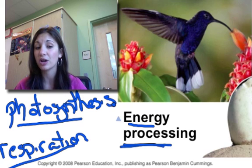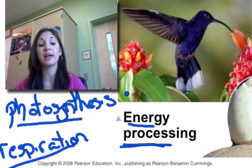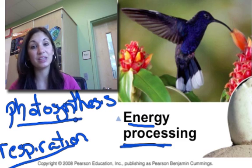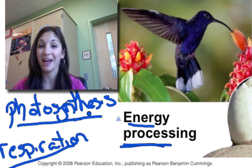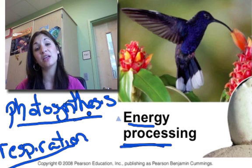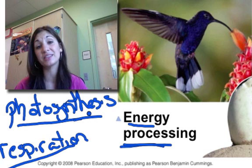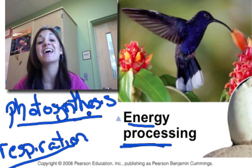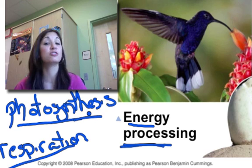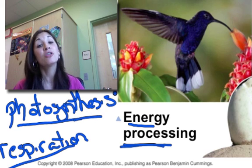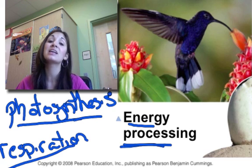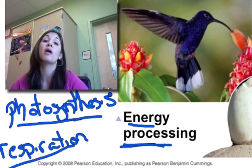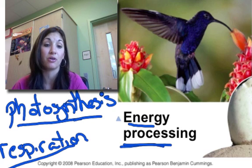Respiration occurs in the mitochondria. A common misconception is that photosynthesis happens in plants and respiration happens in everything else. Respiration does happen in everything else, but it also happens in plants — because the chemical energy produced by the plant through photosynthesis still needs to be converted for the plant to grow, develop, move, and respond to the environment. Plants take in sunlight, convert it to a usable form, and then convert it into ATP for their own use.